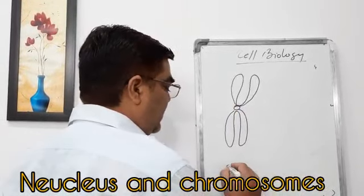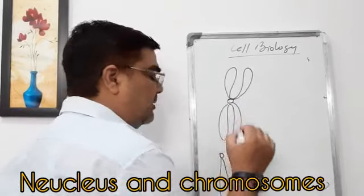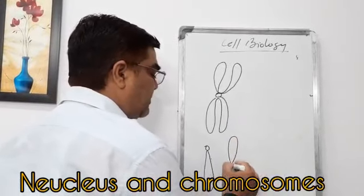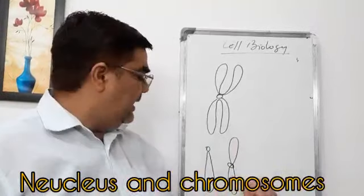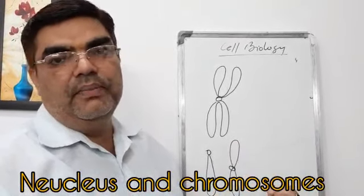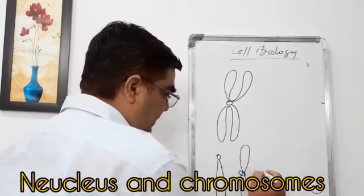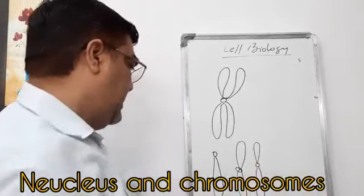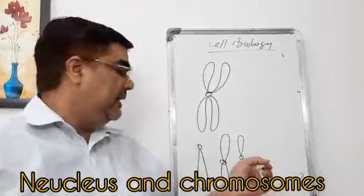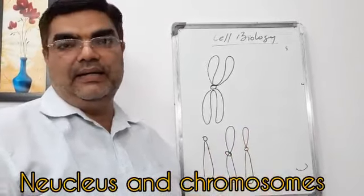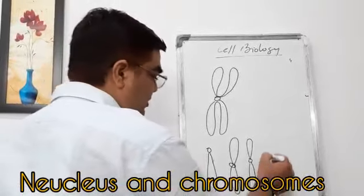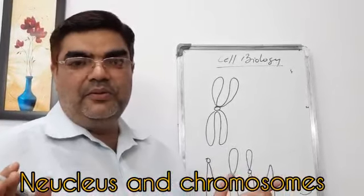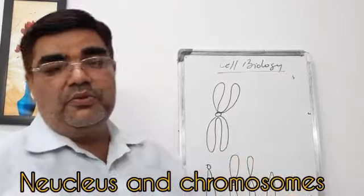If the centromere is present at the terminal point, the chromosome is called telocentric. If the centromere is present in between the two arms, this type of chromosome is called metacentric. If the centromere is just above the center — where one arm is long and one is short — it is called sub-metacentric. If there is no centromere, it is called an acentric chromosome. This is all about the nucleus and chromosomes.